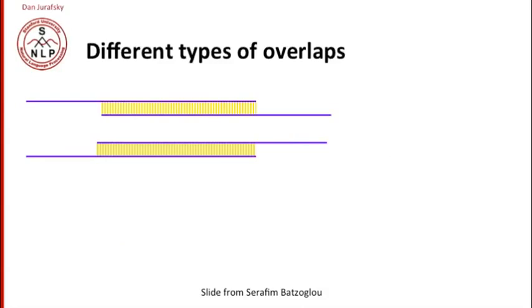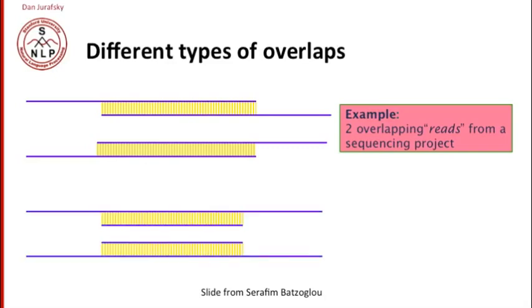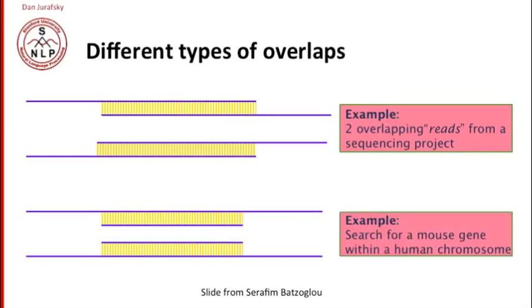So we'd like to modify the algorithm so it doesn't penalize gaps at the end. And in fact, there can be various different kinds of overlapping of this sort. This might happen when we're doing sequencing and we have overlapping reads, or it might be that we're looking for a piece of a gene inside another piece, a subset piece inside a larger piece.